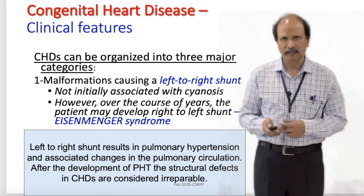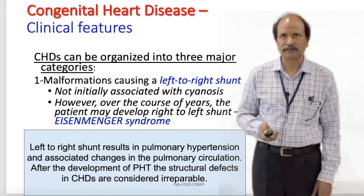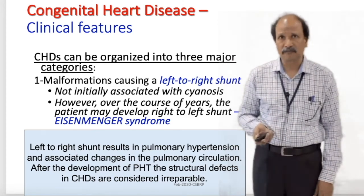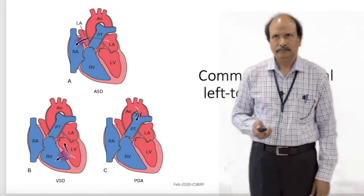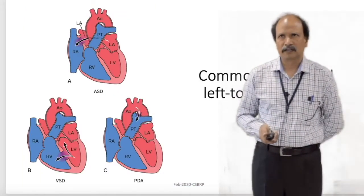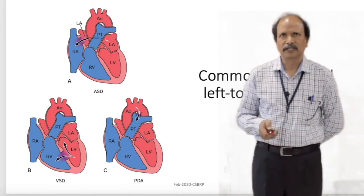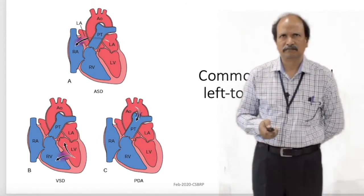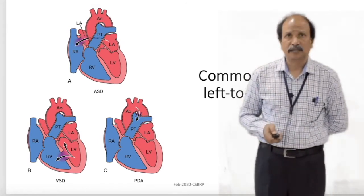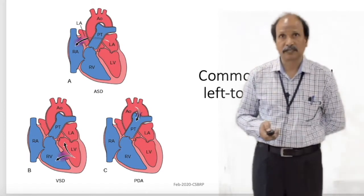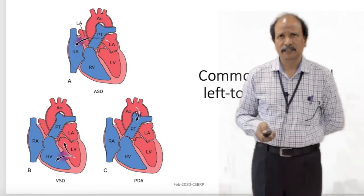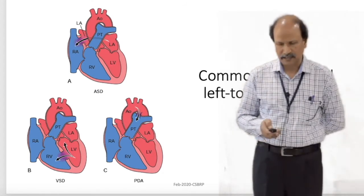The congenital heart diseases where you will see right to left shunt are associated with the development of cyanosis from the time of birth. Whereas the congenital heart diseases where there is left to right shunt, they may not have cyanosis to start with. But in the course of time, after a few years, they may develop cyanosis because of reversal of shunt. This is known as Eisenmenger syndrome. Common examples for left to right shunts are ASD (atrial septal defect), VSD (ventricular septal defect), and PDA, where instead of closing it remains patent.